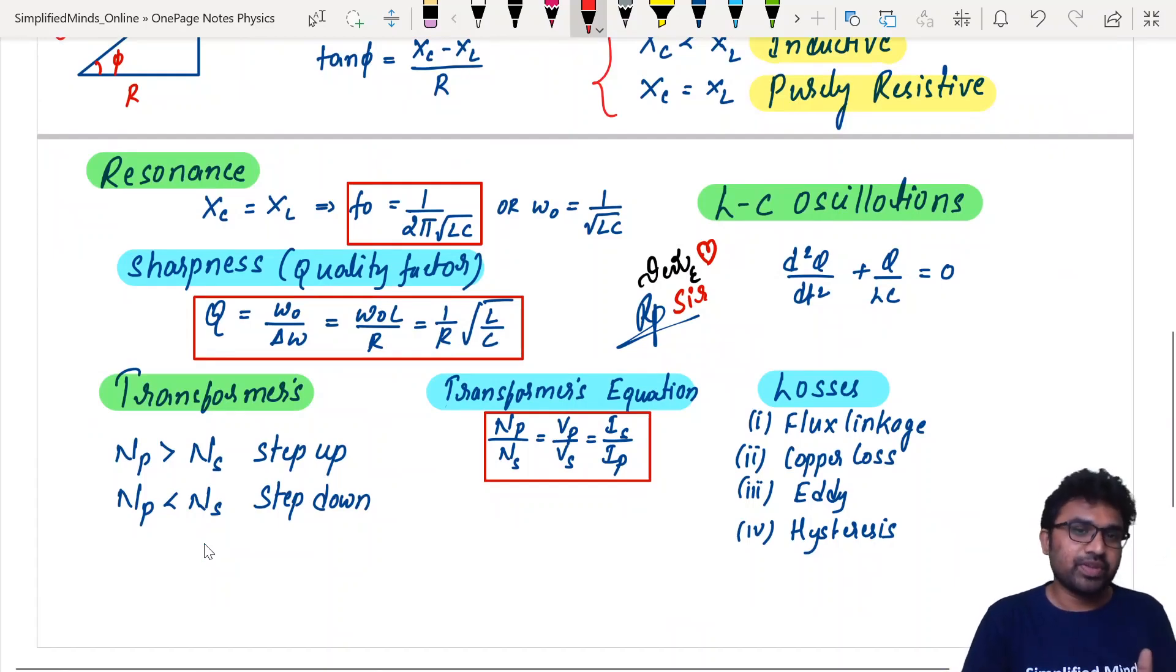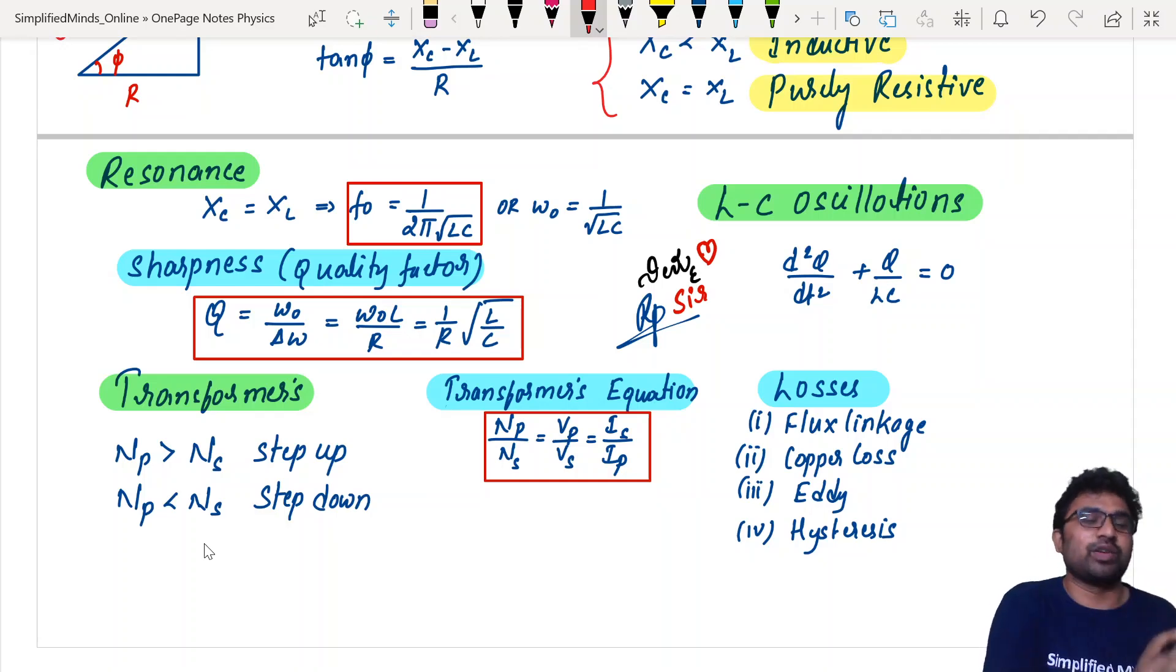Resonance condition is XC is equal to XL, so minimum impedance. Only at resonance you can have the minimum impedance. You should know the frequency, the resonating frequency. You should know that in terms of omega naught also, angular frequency. And then the sharpness, what's the quality factor? You know the formulas for all these things. And LC oscillations, you just have to understand the concept of LC oscillations.